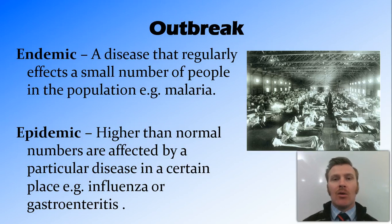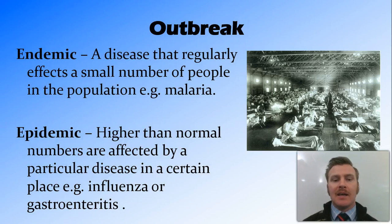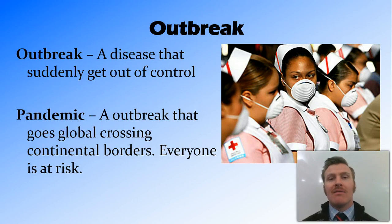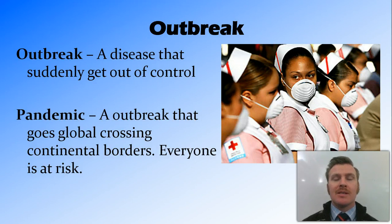For example, when influenza or gastroenteritis goes through the boarding houses, this would be considered an epidemic — higher than normal numbers. With an epidemic it's a very localised thing, a particular disease in a particular place, on a small scale. It's classified as an outbreak if the disease gets out of control within the community and starts spreading into other places. Once a disease reaches pandemic level, the outbreak has gone global, crossed continental borders, and puts everybody in the world at risk — the highest level of outbreak we can have.